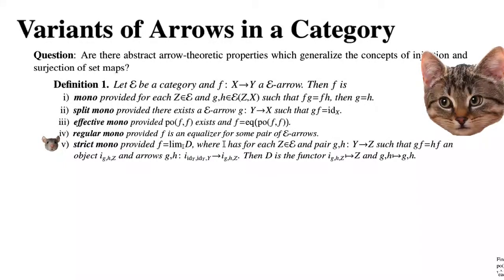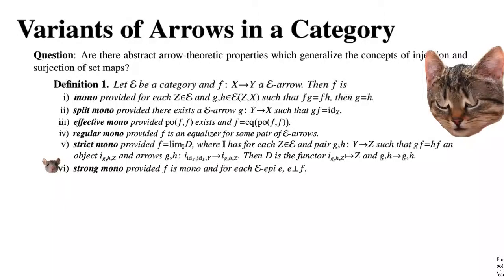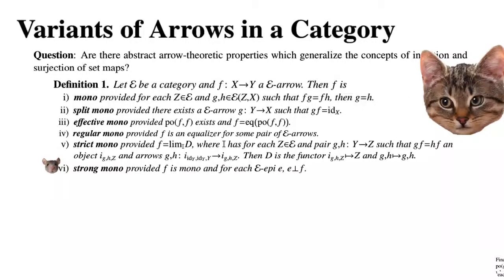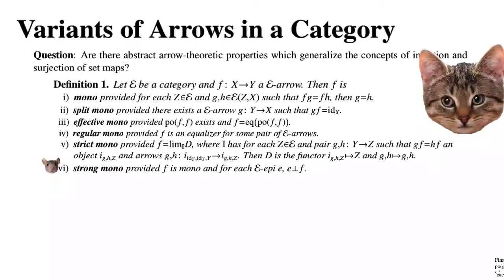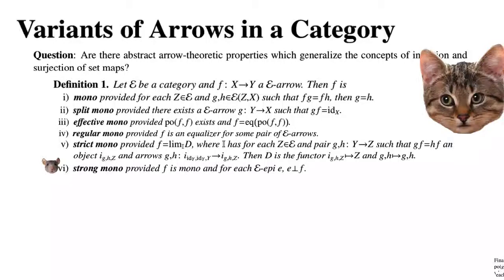We say that F is strong mono provided F is mono and for each epi E, E is orthogonal to F. We suggest looking at the concept of orthogonality on nLab; a video on this will be made when discussing factorizations.